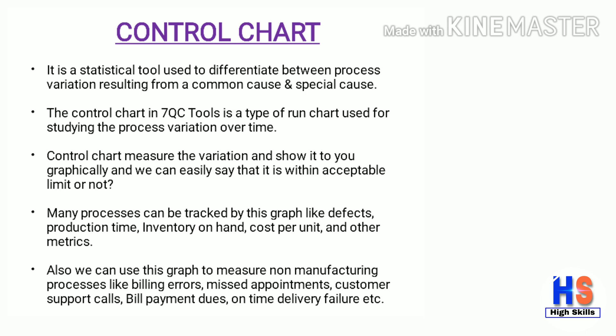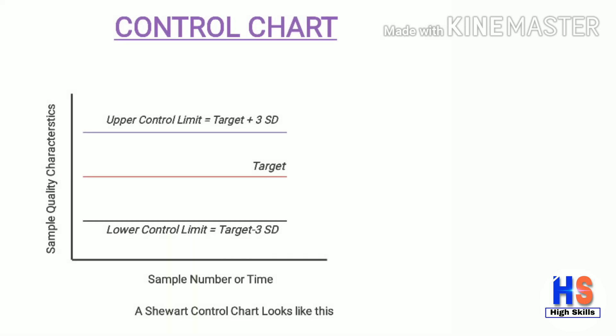In SPC it is very important to understand the control chart. What is a control chart? It is a statistical tool used to differentiate between process variation resulting from common cause and special cause. The control chart, one of the seven QC tools, is a type of run chart used for studying process variation over time. It measures the variation and shows it graphically so we can easily determine if it is within acceptable limits. Many processes can be tracked — defects, production time, inventory on hand, cost per unit, and other metrics — as well as non-manufacturing processes like billing errors, missed appointments, customer support calls, on-time delivery failure, etc.